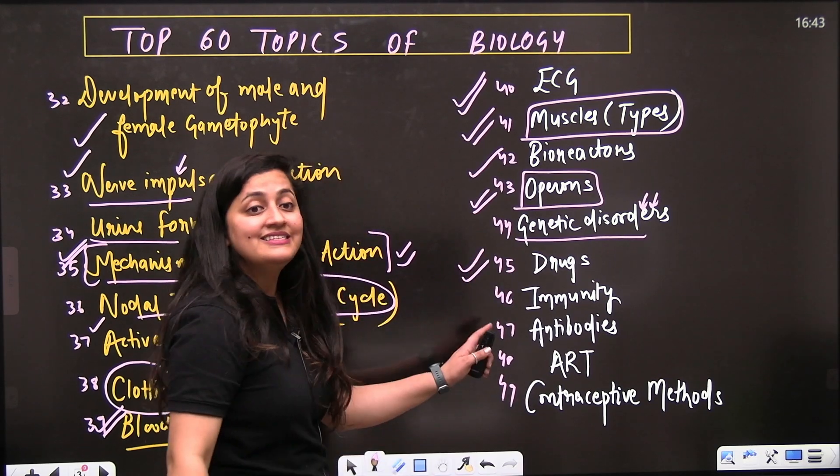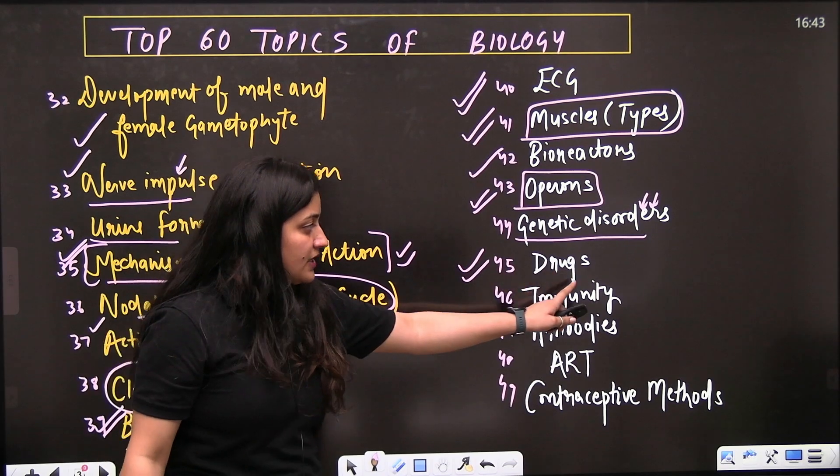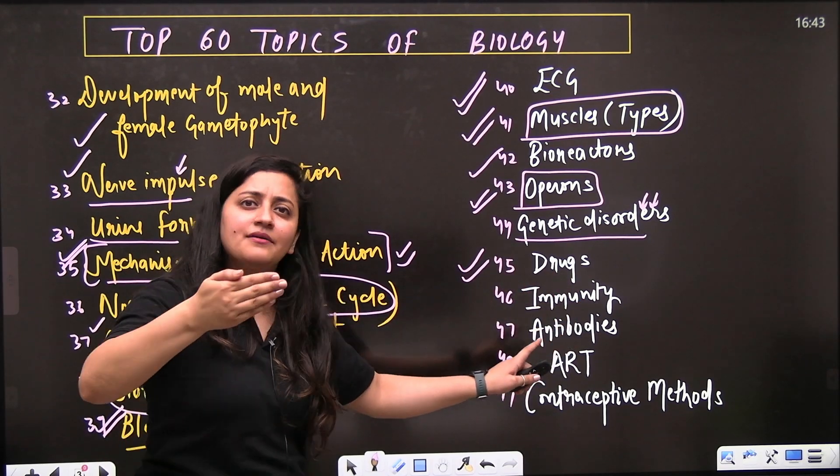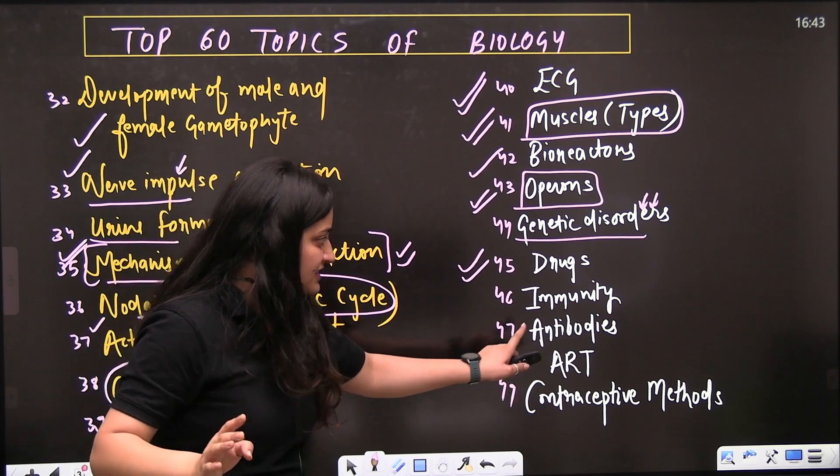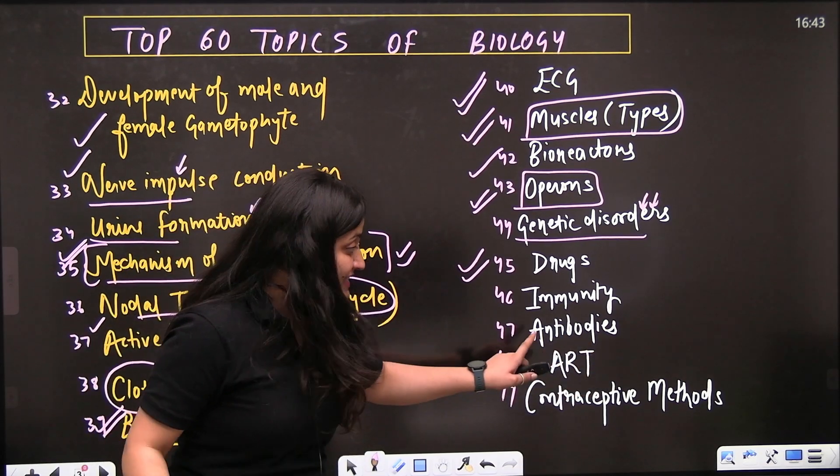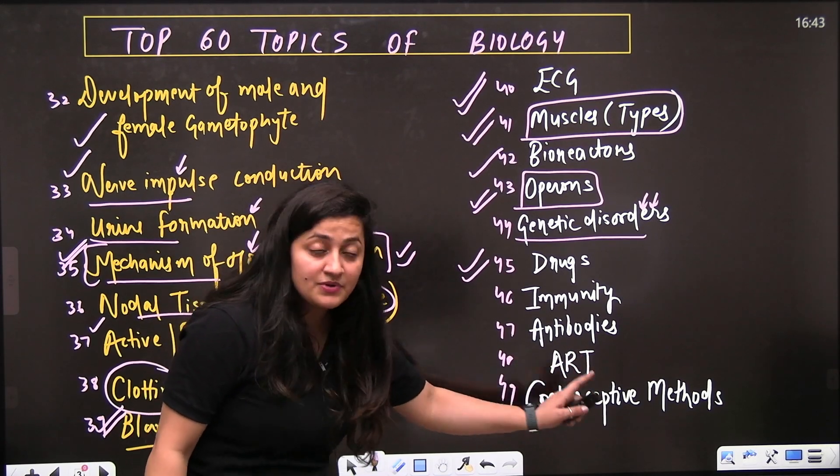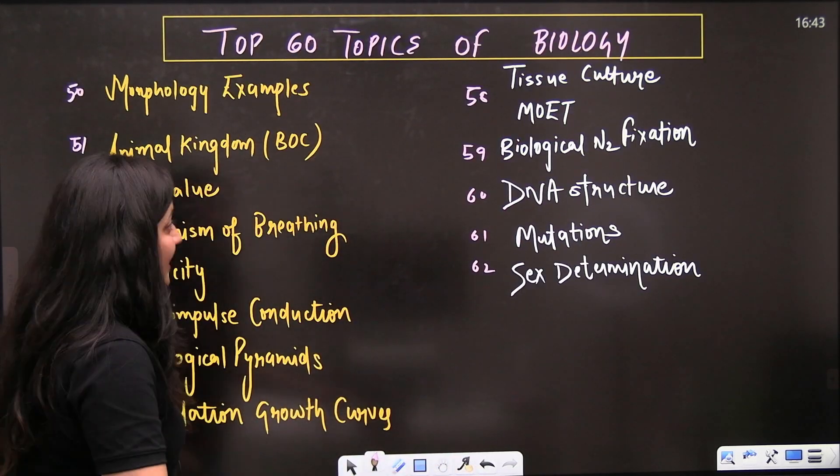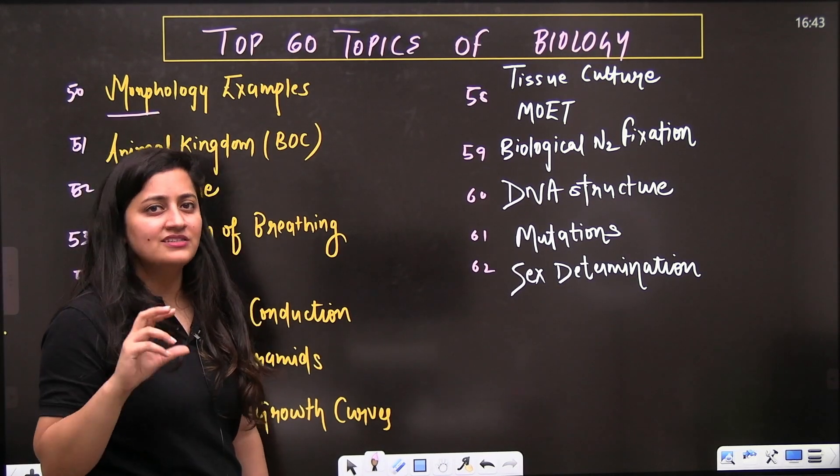From human health and disease, drugs - this part is important, two questions will come. And immunity - active-passive immunity difference, specific-non-specific immunity difference, then different types of antibodies. Assisted reproductive technology from reproductive health, contraceptive methods from reproductive health.